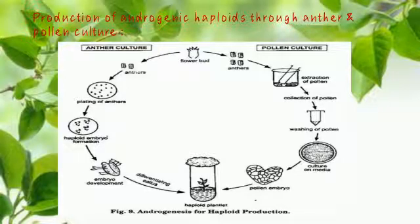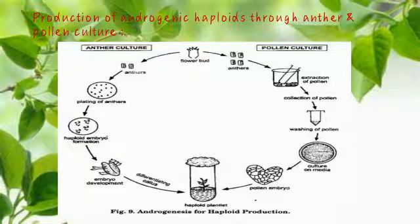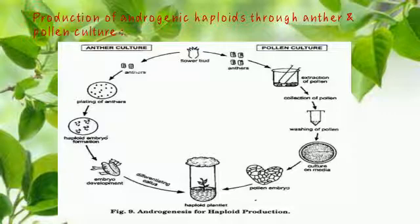For production of haploids through anther culture: from the flower bud, the anthers are removed and treated, leading to haploid embryo formation. The embryo is then developed into a haploid plant.